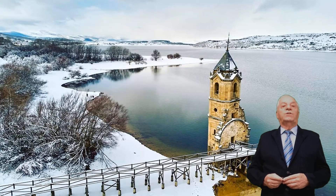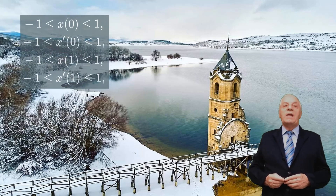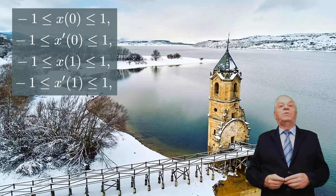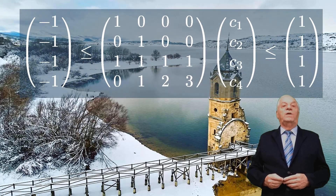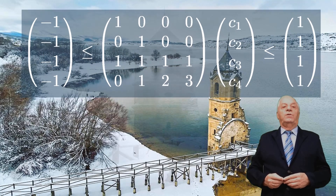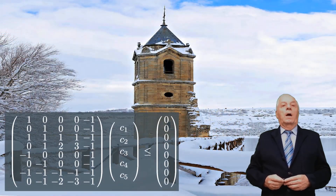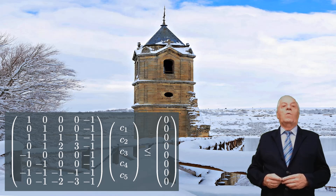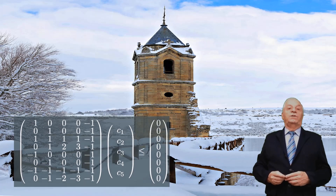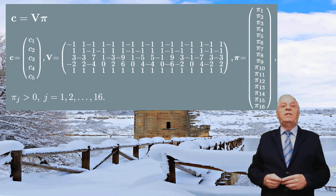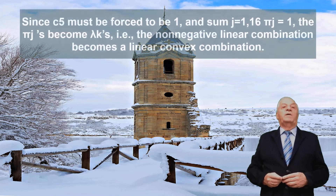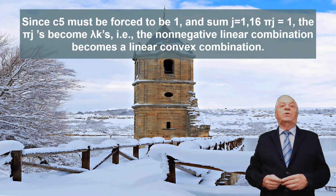If the deflection and rotation at the two ends t=0 and t=1 of the beam are bounded — say, by −1 and 1 — we have these conditions, and using the previous equations, the following constraints are obtained. To solve this system of inequalities, an artificial unknown c5=1 is used, so the system becomes as indicated, the solution of which is the cone in this expression, where V is the matrix whose columns are the vectors v. Since c5 must be forced to be 1, the pi coefficients become lambda coefficients, and the non-negative linear combination becomes a convex linear combination.